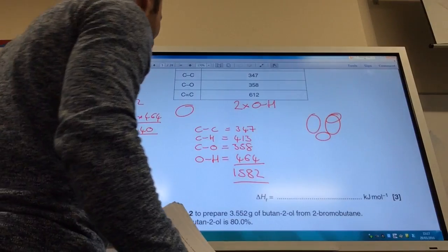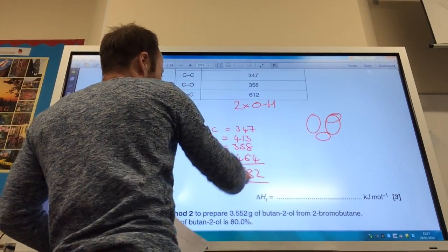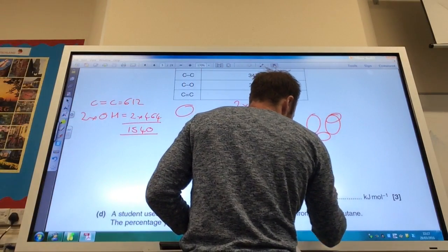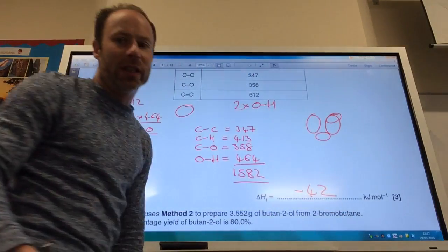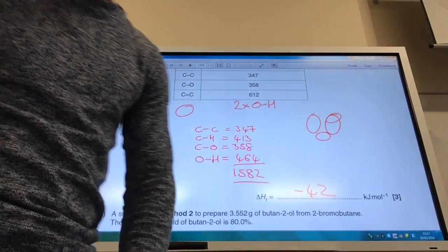And delta H for that reaction is going to be that number minus that number. And so your answer is minus 42. Sorry about the board issues.